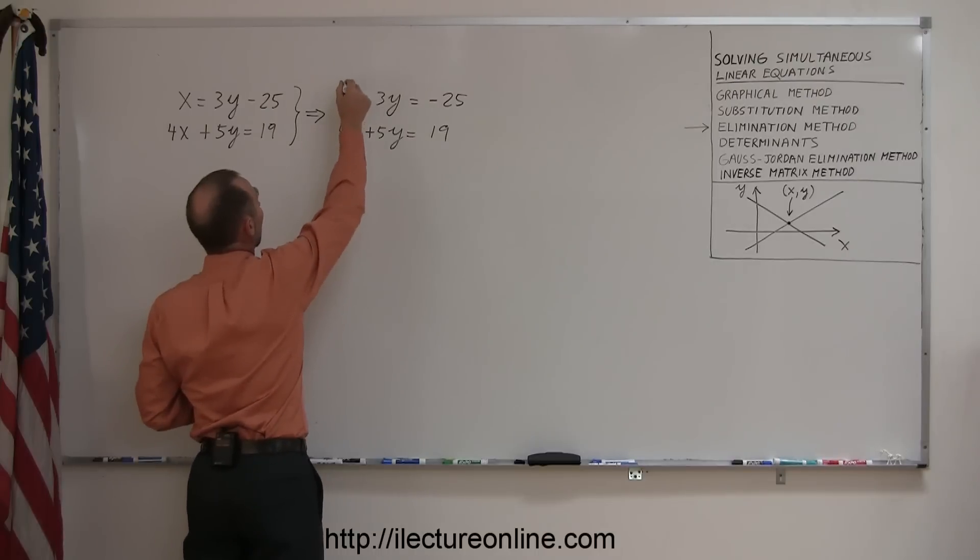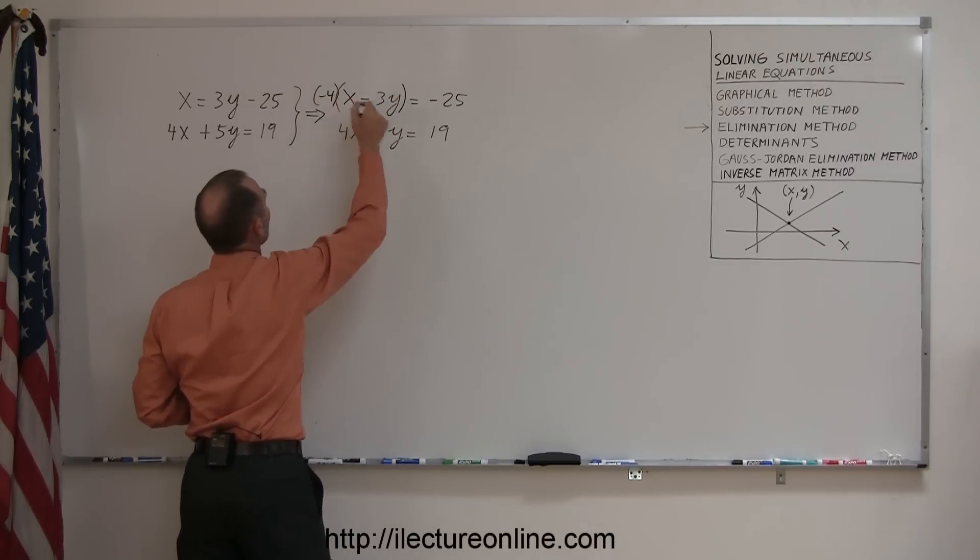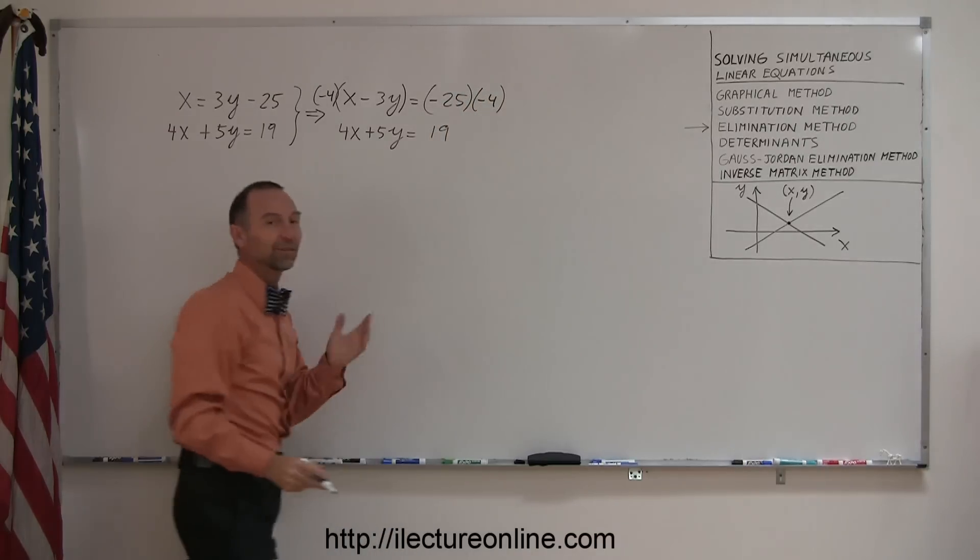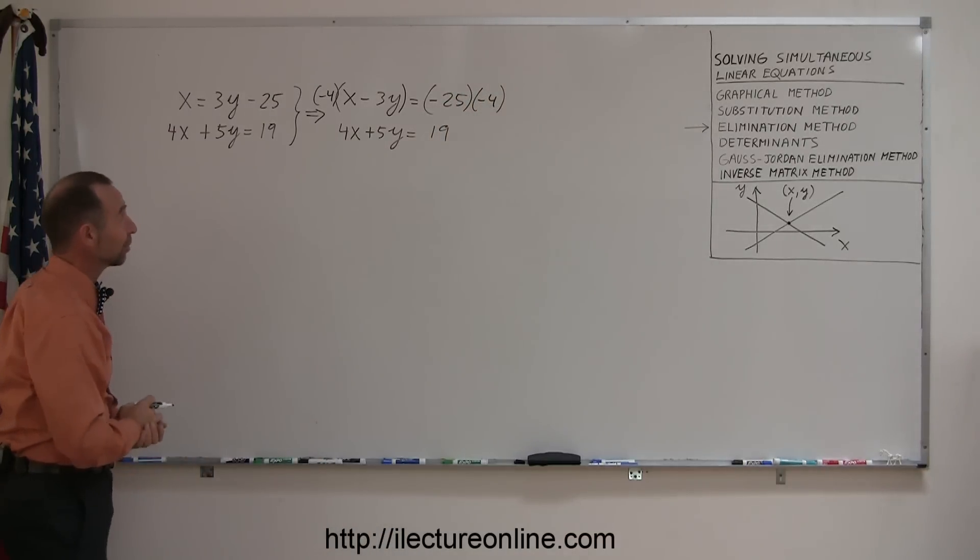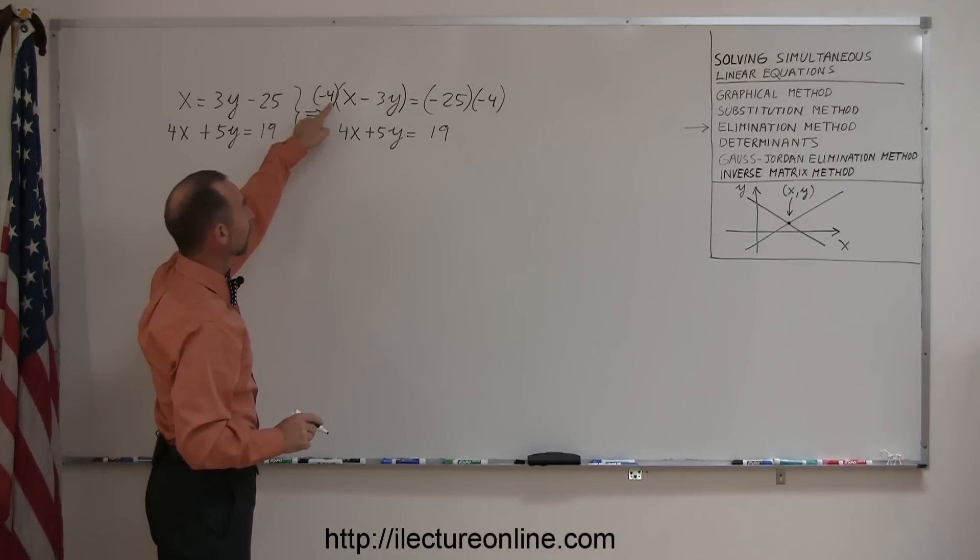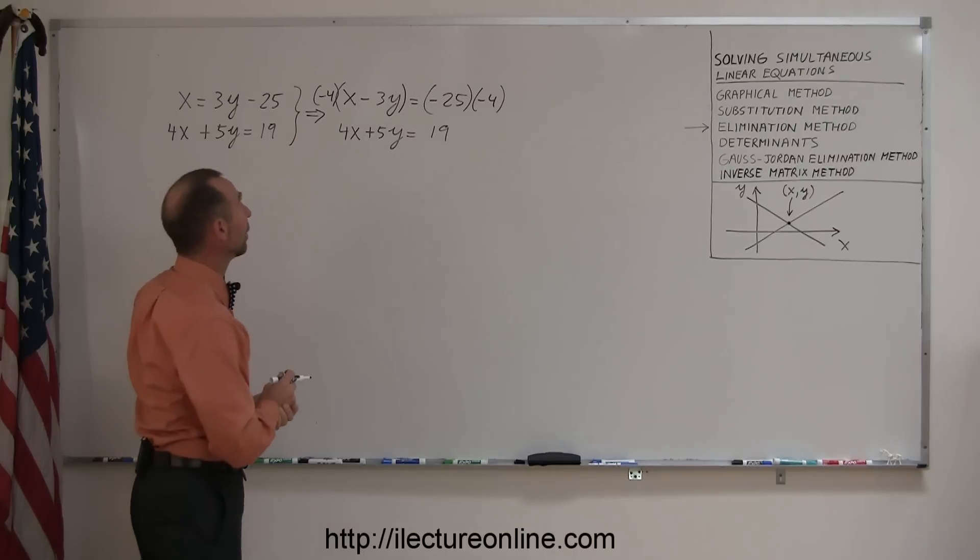So I'm going to multiply the top equation, the left side by minus 4, and I'm going to multiply the right side by minus 4 as well. Of course, whenever I do one side of the equation, I have to do exactly the same to the other side. So what I have in mind is if I multiply this x by minus 4, this will become a minus 4x. And if I then add it to this number, the x's will drop out. And that's exactly what I want.